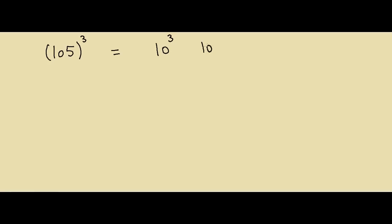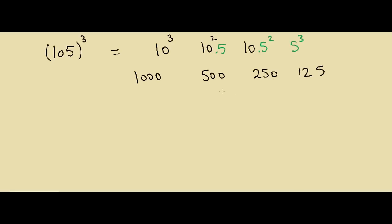Now let's say we have 105 and we have to take the cube of this number. We'll write 10 cube, 10 square, and 10, then 5 cube, 5 square, and 5. Calculating these: 10 cube is 1000, 10 square is 100 giving 2500 for the next column, 10 gives 1000, then 15, and 5 cube is 125. Multiplying the middle terms by 3 gives 1500 and 750.